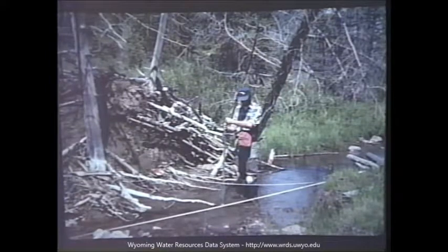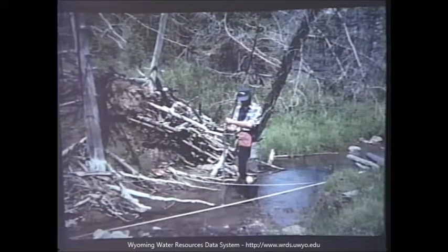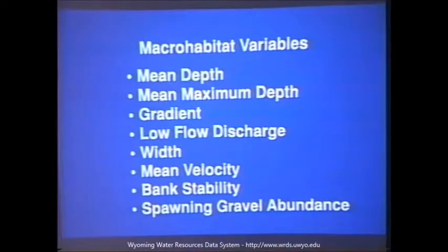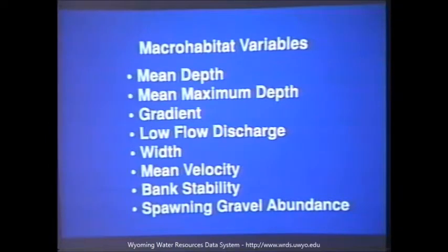We quantified available habitat using point transect methods, which are typical of many habitat analyses done on streams. Variables that we used in the model include mean depth, mean maximum depth, gradient, low flow discharge, width, mean velocity, bank stability, and spawning gravel abundance. Many of these are similar variables used in standard habitat analysis.